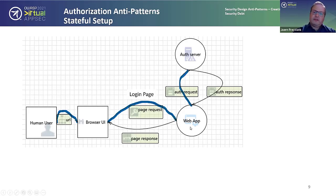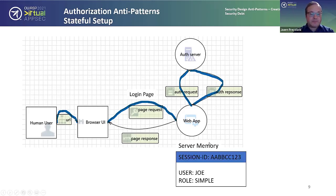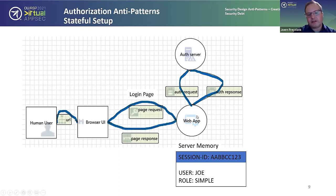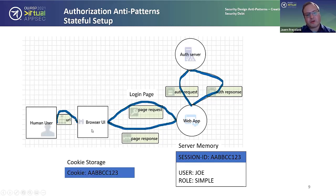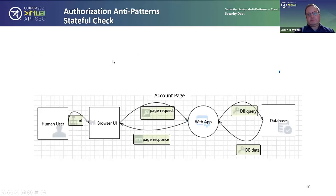At the end of the authentication flow we have a session in memory — a piece of code that lives in memory with an address, a username, and a role. The session ID, the key to that memory space, is sent back to the application in the form of a cookie and stored in the browser. That's the regular stateful setup most people are familiar with. Now we want to switch to stateless, but we first need to understand how this works.